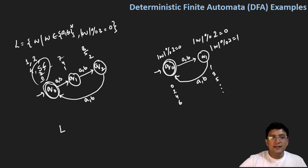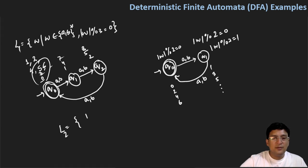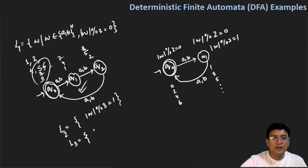If the language L1 requires the length of a string mod three equals one, then I will make q1 the final state instead of q0. Similarly, for language L2 where the length of the string mod three equals two, I will make q2 the final state.